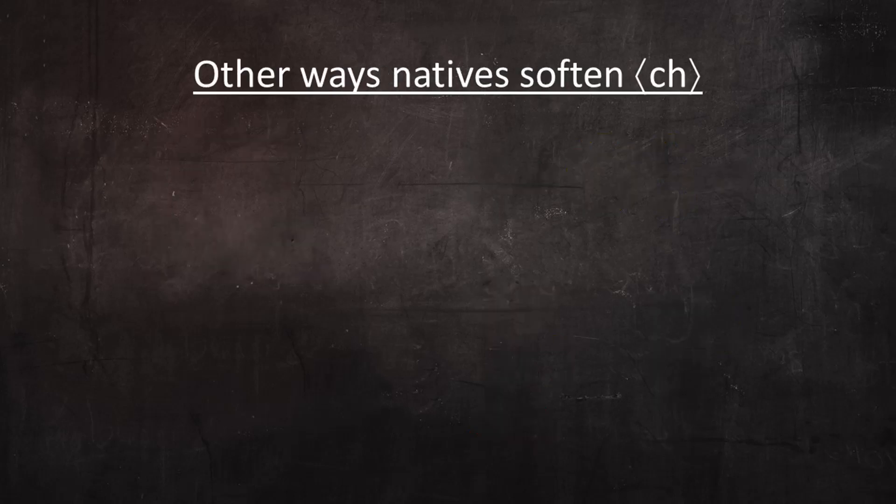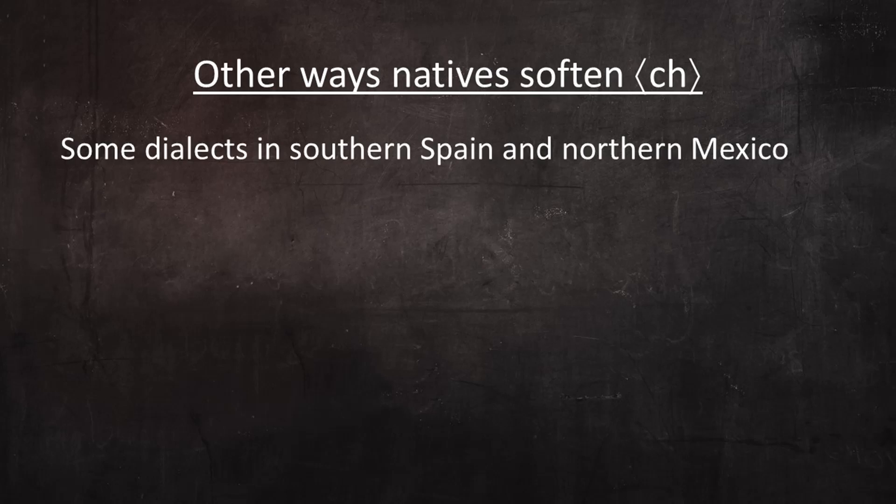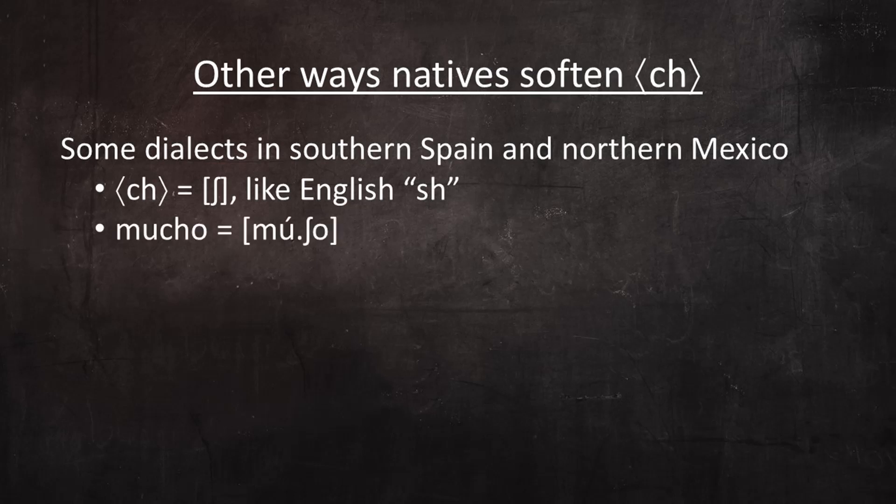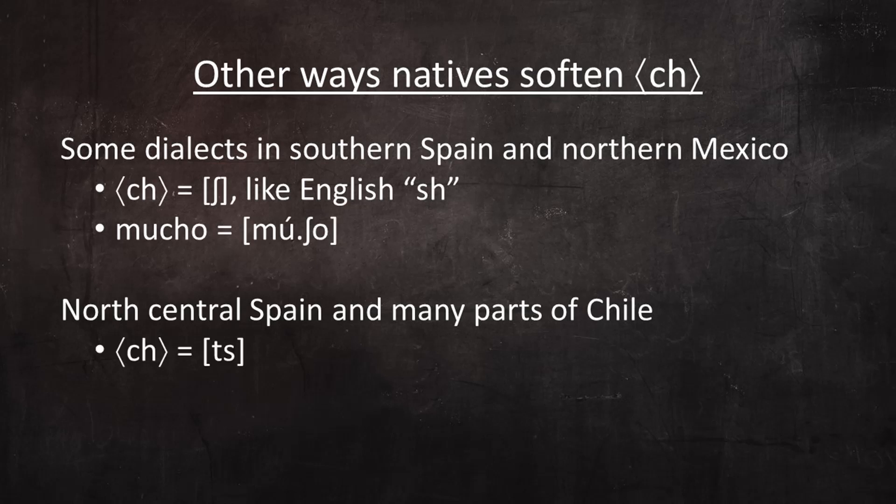In addition to the general tendency to pronounce CH more softly, less explosively, there are dialects of Spanish that further soften CH by altering its pronunciation a little. For example, in some dialects in southern Spain and northern Mexico, CH is pronounced like English SH, so the word mucho would be pronounced more like mucho. And in north-central Spain and many parts of Chile, CH is pronounced more like TS, so mucho would be pronounced something like mucho. Of course, these aren't the only places in the Spanish-speaking world that alter CH in this way, so don't be surprised if you run into one of these pronunciations in your travels.